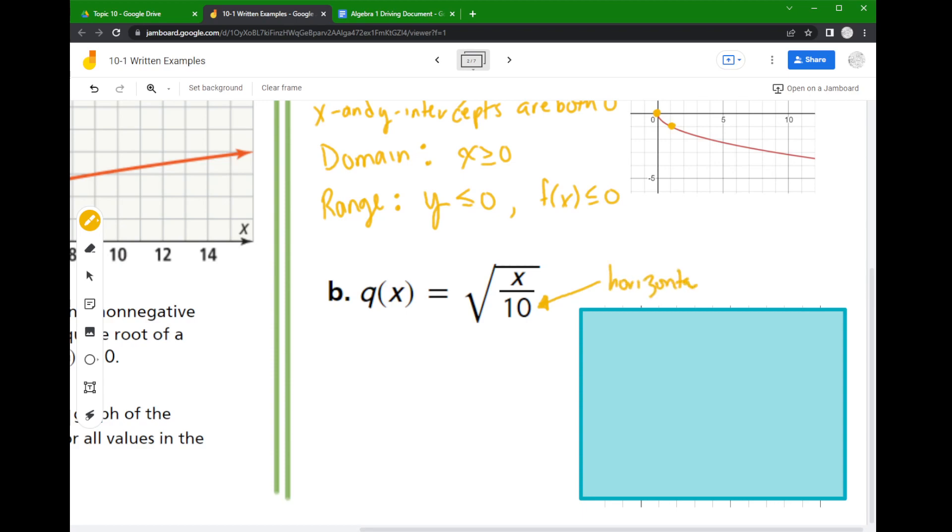And so horizontal changes always feel backwards. So usually when you divide by a number or multiply by a number between 0 and 1, it's usually a compression when you're talking about it vertically. Here when you divide by a number or multiply by something between 0 and 1, it's going to be a stretch.